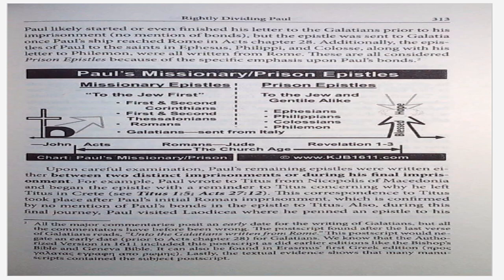All the major commentaries posit an early date for the writing of Galatians, but all the commentators have been wrong before. The postscript found after the last verse of Galatians reads: unto the Galatians written from Rome. This postscript would negate an early date prior to Acts chapter 28 for Galatians. We know that the authorized version in 1611 included this postscript, as did earlier editions like the Bishop's Bible and the Geneva Bible. It can also be found in Erasmus' first Greek edition. Lastly, the textual evidence shows that many manuscripts contained the subject postscript. On page 313, the chart is titled Paul's Missionary vs. Prison Epistles.